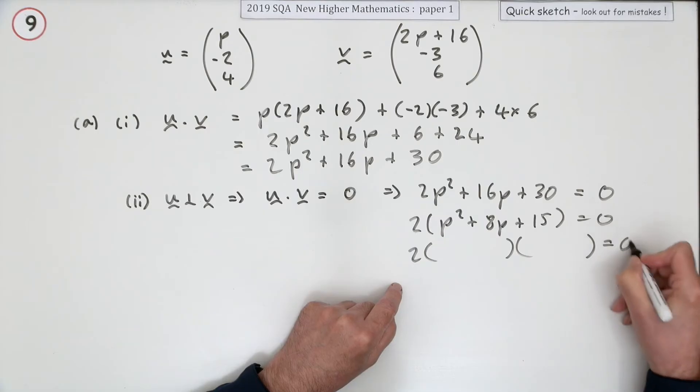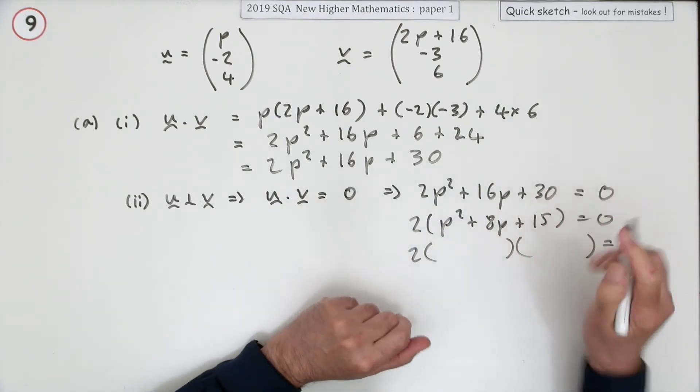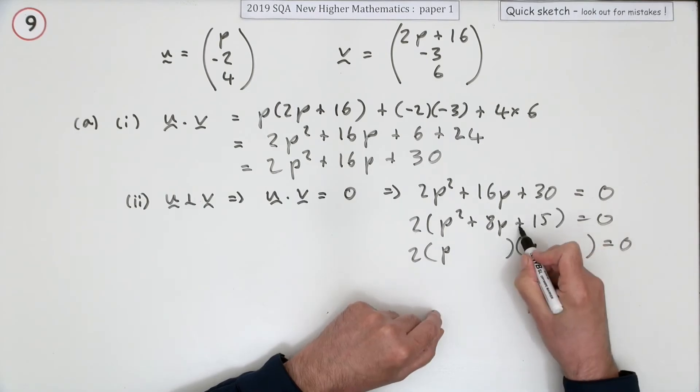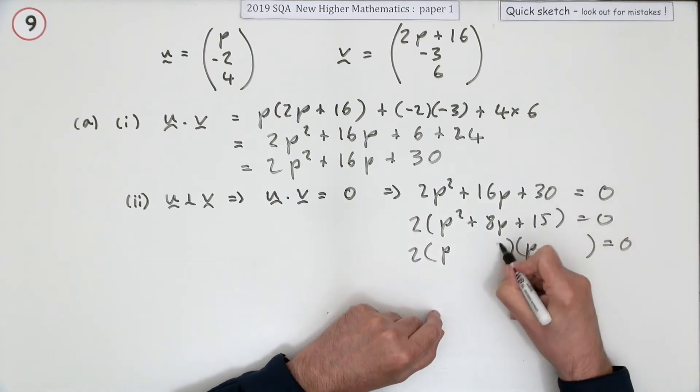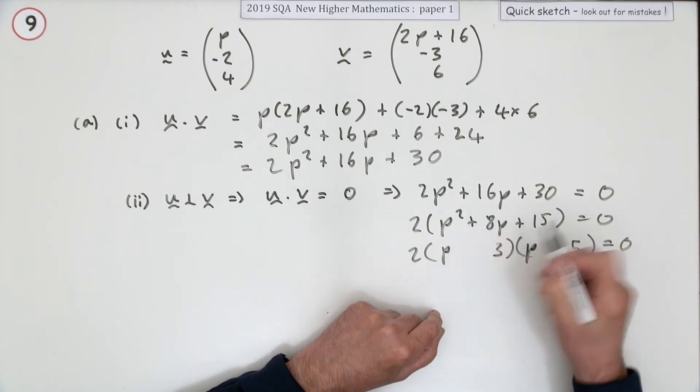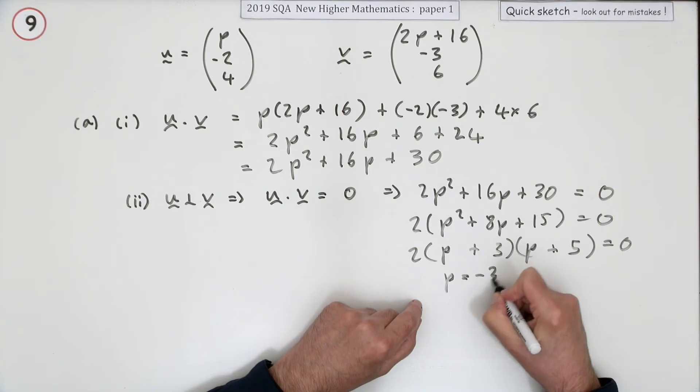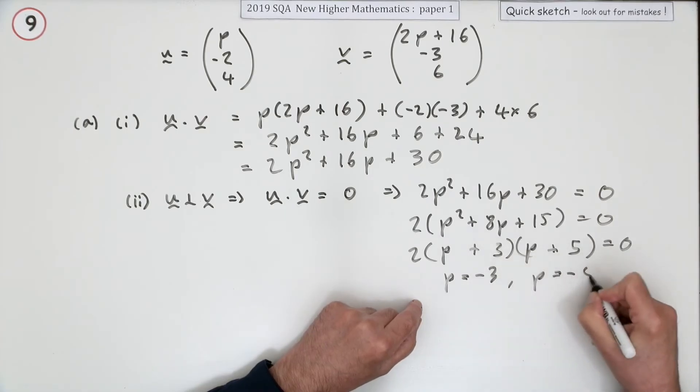A bracket times a bracket, because we just suppose it does factorize since it's paper 1. Must be p times p, multiply to give 15 and add to give 8 - that will be 3 and 5, and they're all positive. So that means the values will be either p is -3 or p is -5.